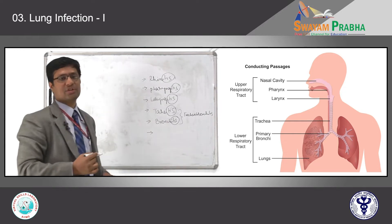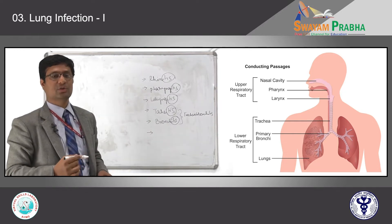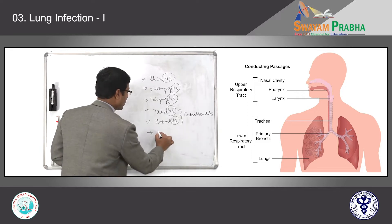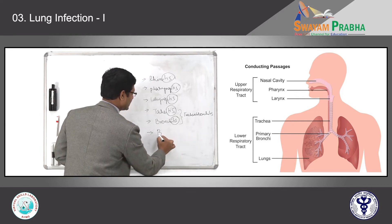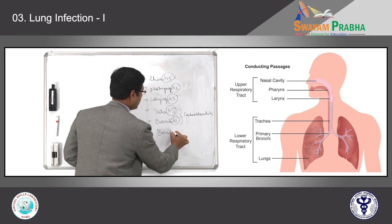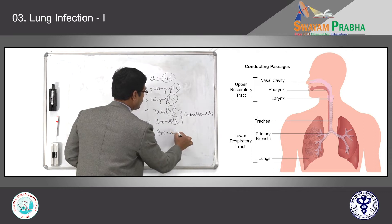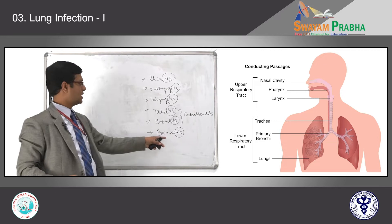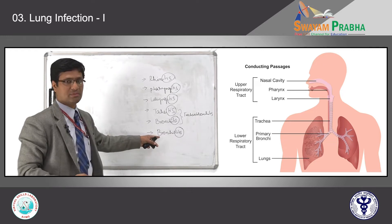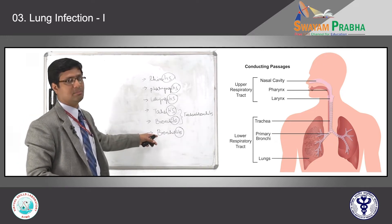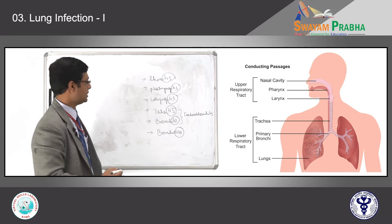If the inflammation is limited to the terminal bronchioles, we call it bronchiolitis. '-itis' means inflammation — whichever part of the respiratory system is infected, we add that as a prefix to '-itis'.